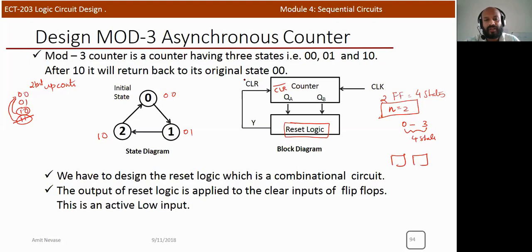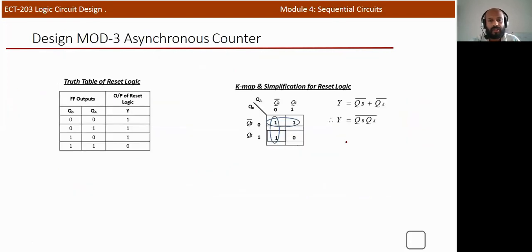We need to design an active-low signal that activates when the state is 11 to clear the count. The truth table for the reset logic Y: for states 00, 01, and 10, Y = 1; for state 11, Y = 0. We design this logic using a K-map.